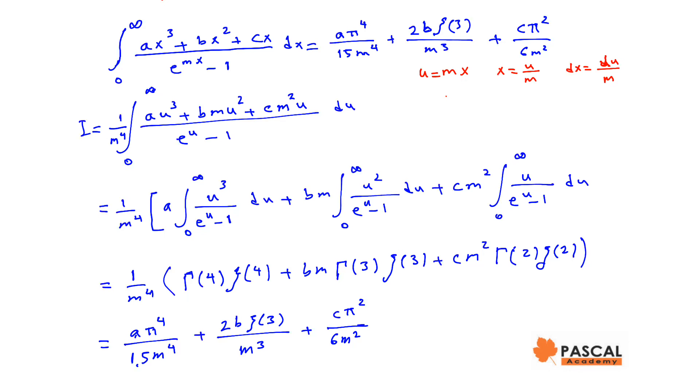Now, using this substitution, I can be written as (1/M⁴) times the integral from 0 to infinity of (AU³ + BMU² + CM²U) divided by (e^U - 1) dU. So, this integral can be broken into 3 integrals,